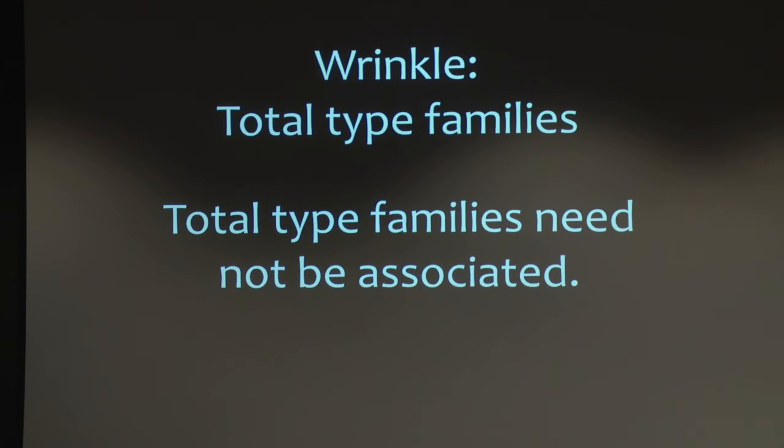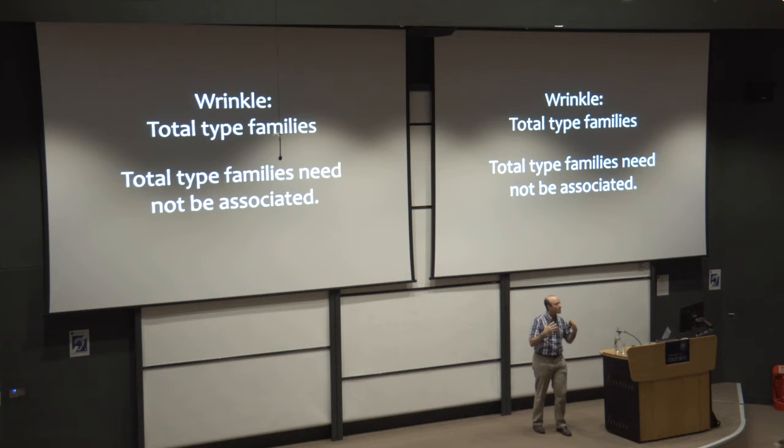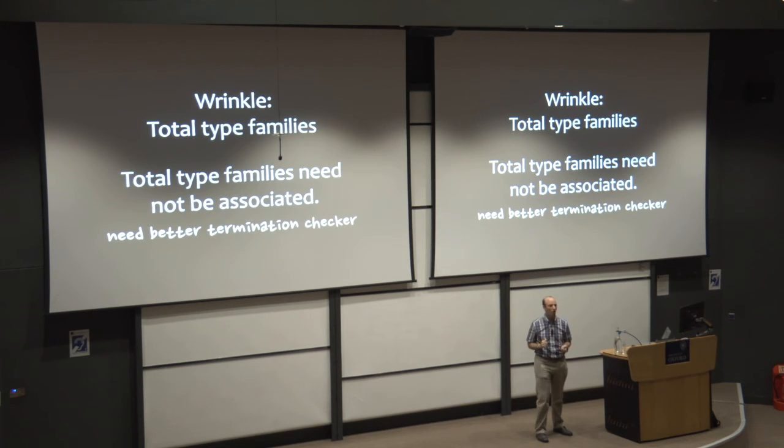So there's two wrinkles in this story. The first is that some type families are total. So we saw an example of that with IKT. And we still want to have those. And we still want those to be top level. Of course, discovering what's a total type family is a little bit hard. And right now, GHC has a termination checker, which you can turn off with undecidable instances. And lots of people turn off all the time because it's very weak. And so maybe we can improve that.